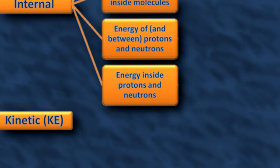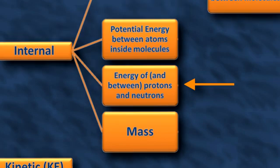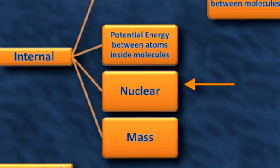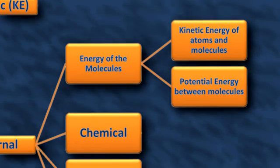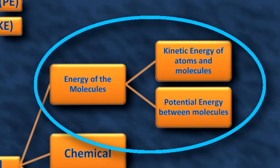Let's take the bottom-up approach. The energy of the stuff inside protons and neutrons isn't temperature — that's just mass. The energy of protons and neutrons isn't temperature either — that's just nuclear energy. The energy between atoms and molecules is just chemical energy. This comes down to the kinetic energy of just the atoms and molecules, so it makes sense that we call this thermal energy. But not all of it — we're not including the motion of the things these molecules make up, just the random bits its molecules would still have if it weren't moving.